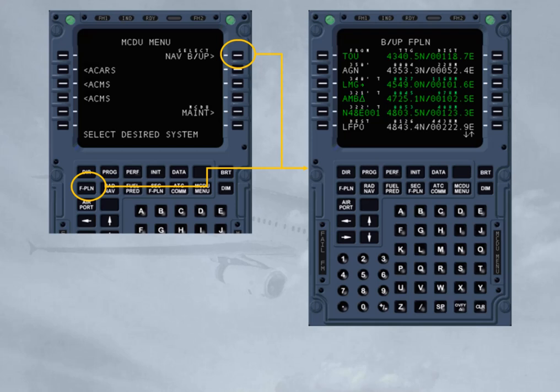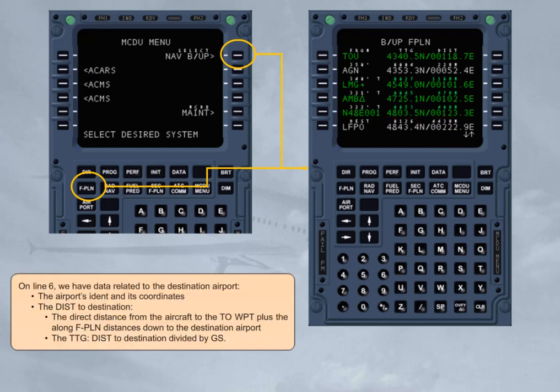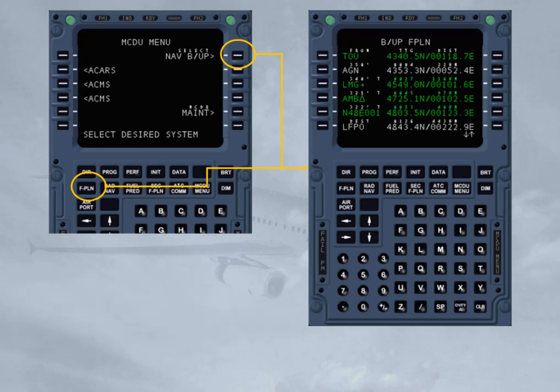Moreover, the Backup Flight Plan page shows the bearing between the aircraft and the to-waypoint. On line 6, we have data related to the destination airport: the airport's ident and its coordinates, the distance to destination — the direct distance from the aircraft to the to-waypoint plus the along-flight-plan distances down to the destination airport — and the time to go, which is distance to destination divided by ground speed. There are no lateral or vertical revision pages in NAV Backup. Each revision is made on the Backup Flight Plan page itself. Note that the NAV database is lost.